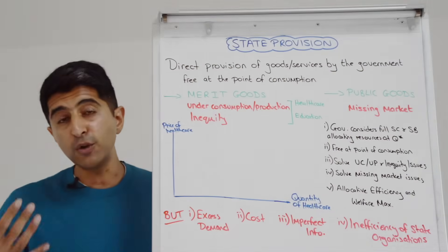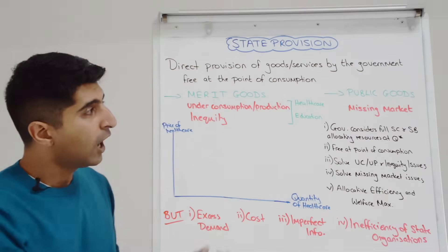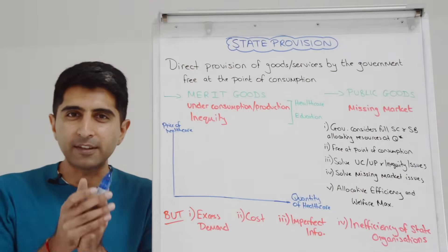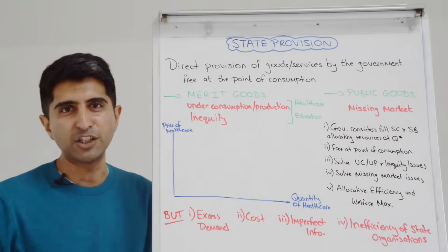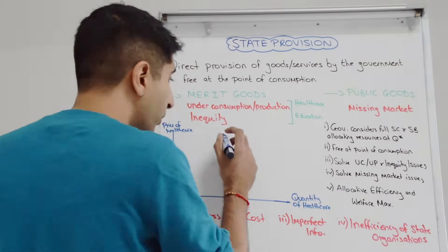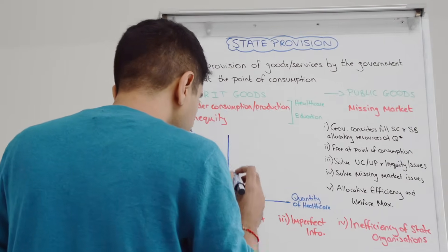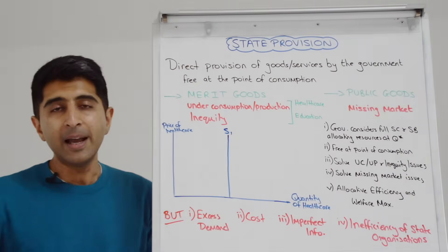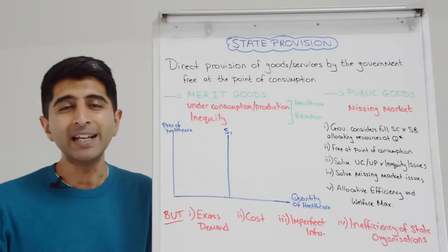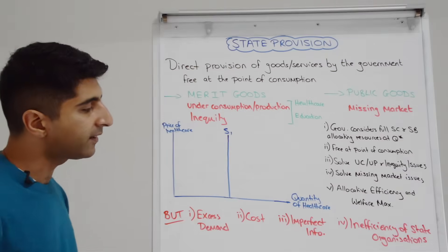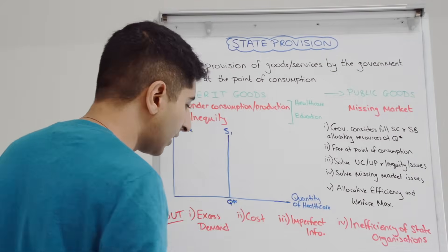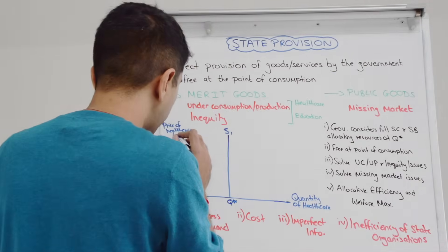If we talk about healthcare in the UK, we have state-provided healthcare — the NHS. We also have state-provided education, state schools. Every year the government has a set budget towards the NHS and towards education. So when we draw the supply curve in a market with state provision, we draw it vertical — perfectly inelastic — because there is a fixed amount of resources allocated to this market every year. That budget can't increase, can't decrease; it's fixed. We assume that to be at Q star, and the demand curve is just normal downward sloping.